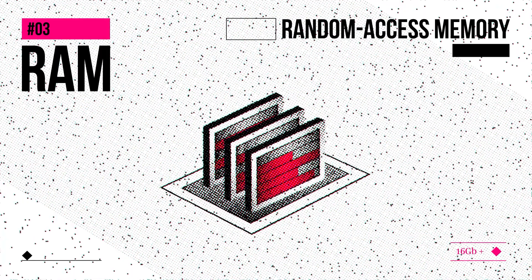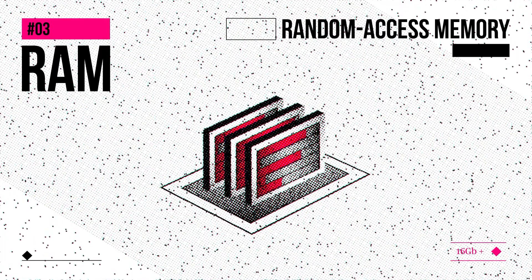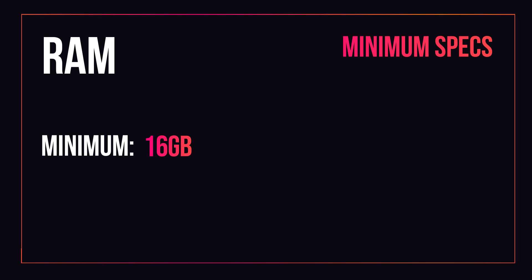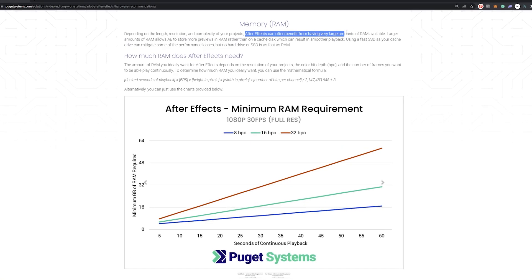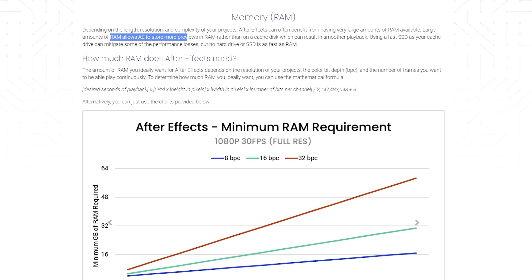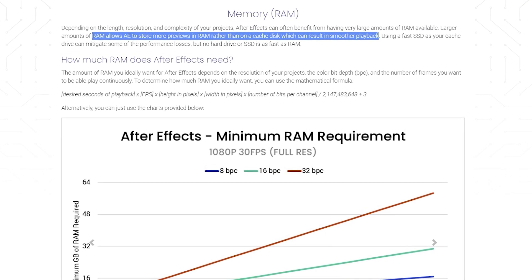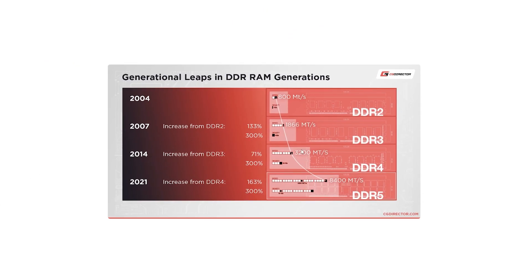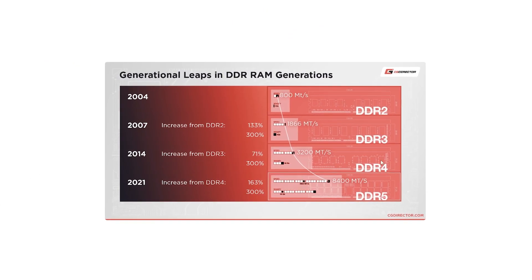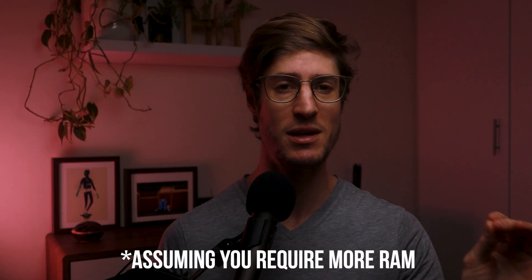Now onto RAM. In my opinion, 16 gigabytes is the bare minimum, with the ideal being 32 gigabytes and up. For After Effects, the higher the better, as this helps massively with previews. Also check the data transfer rate and generation of your RAM. More slightly slower RAM is better than less really fast RAM, so decide based on your budget.